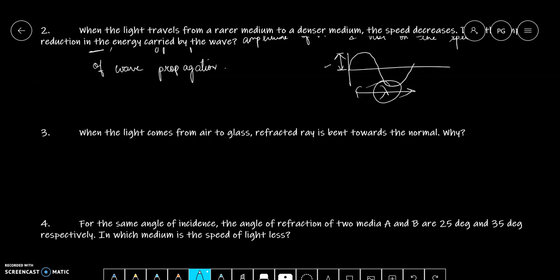Question 3 says, when the light comes from air to glass, refracted ray is bent towards the normal. Why? This means, when light ray, let us suppose it is a glass slab, light ray is from air to glass, then it is bent towards the normal. Why is this so? This means i is greater than r. Why is this so?